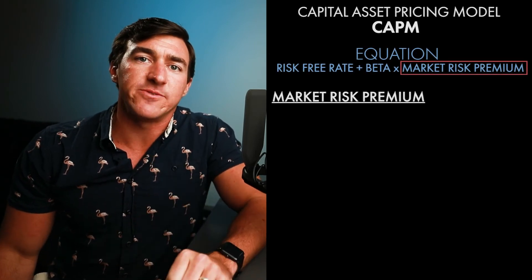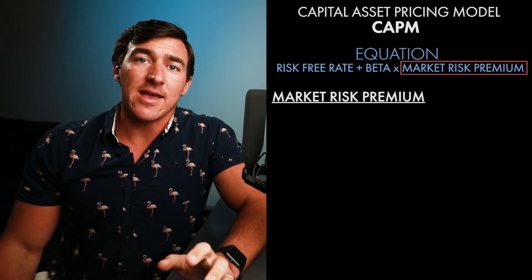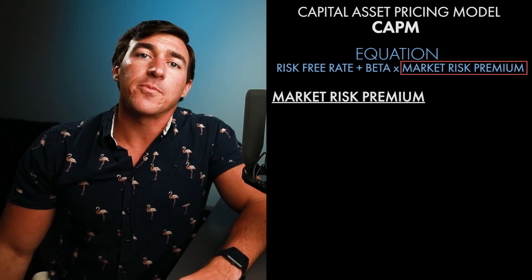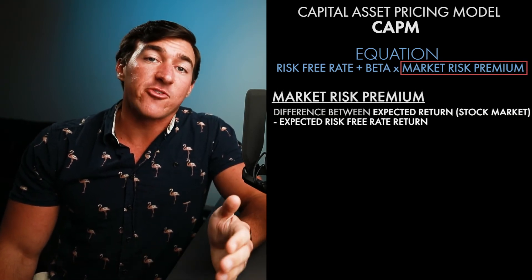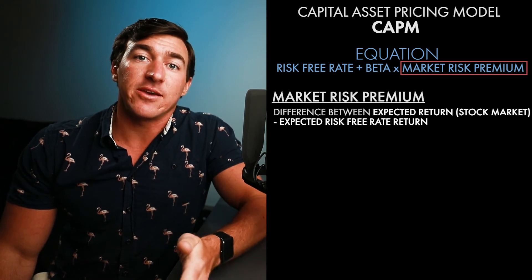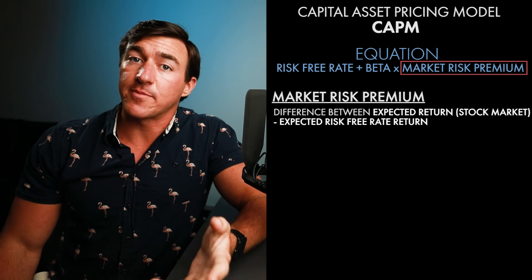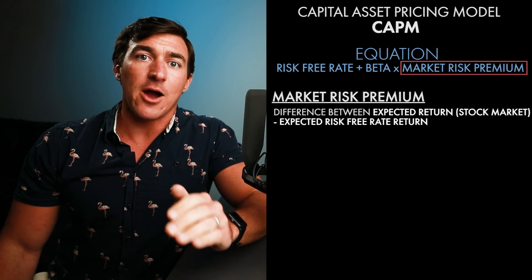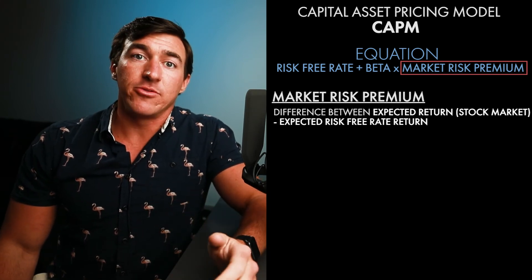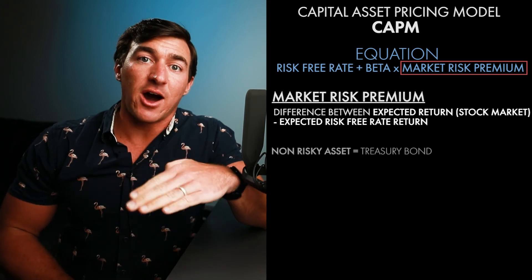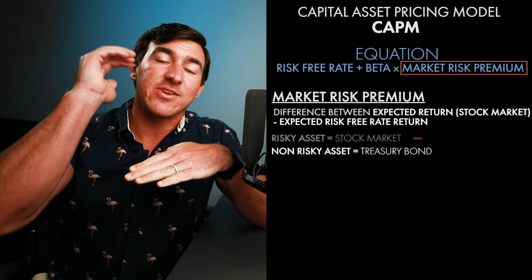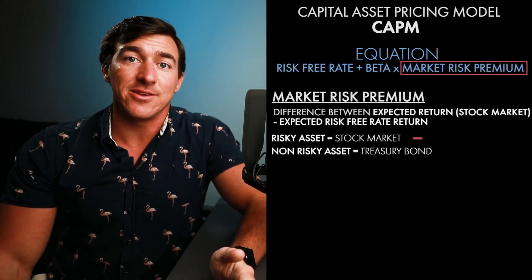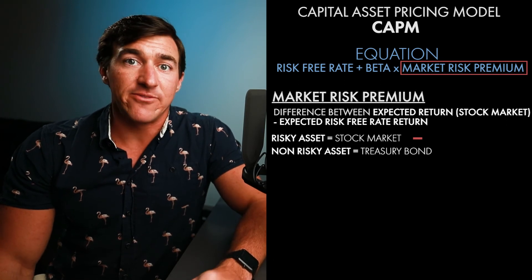Market risk premium is the third variable in the CAPM equation, and while it sounds really fancy, it's really not complicated. Market risk premium is just the difference between the expected stock market return minus the expected risk-free rate return. The risk-free rate is what you'd get investing in U.S. Treasury bonds — something extremely not risky. The market risk premium is just the difference between that non-risky asset and a risky asset — the stock market. We can calculate this by hand, but it's not much fun.